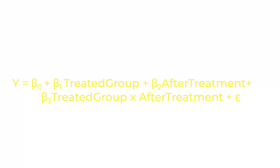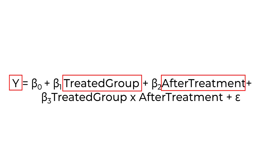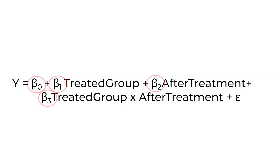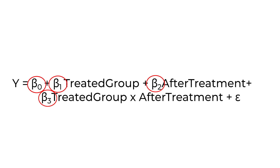We have four means to estimate, and we can set up a regression to estimate them for us. We regress the outcome Y on an indicator for being in the treated group, an indicator for being after treatment, and the interaction between the two — which captures whether you're currently being treated. This gives us four coefficients: beta 0, beta 1, beta 2, and beta 3, corresponding to our four means.